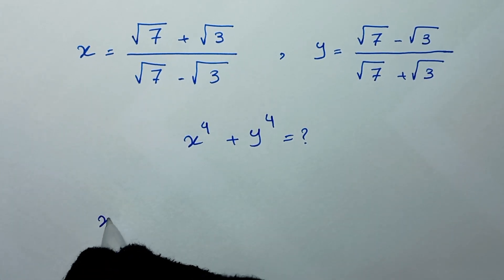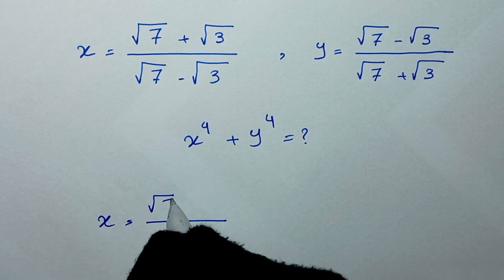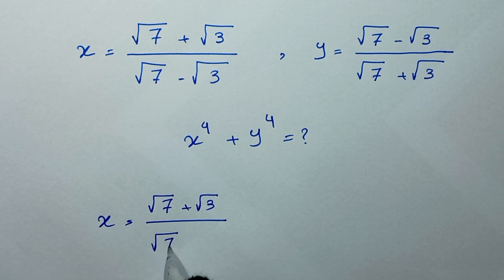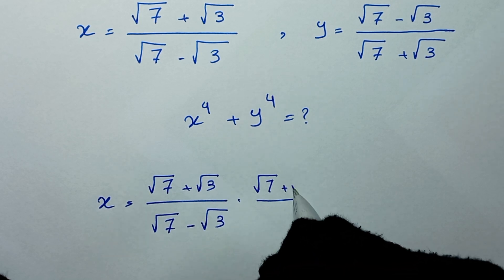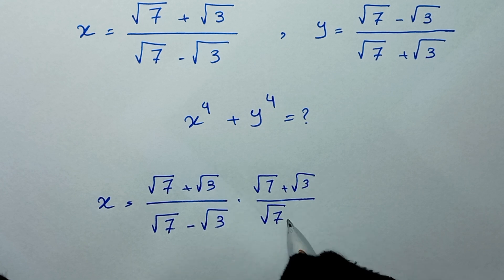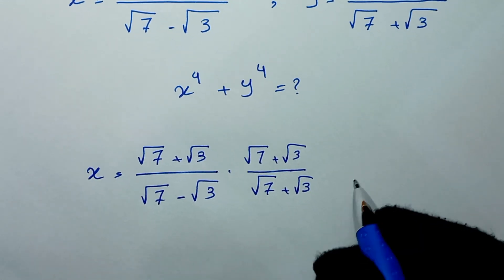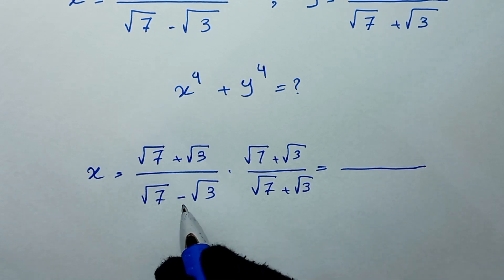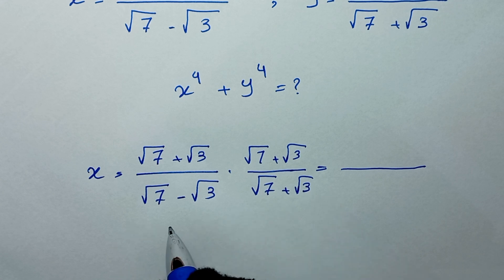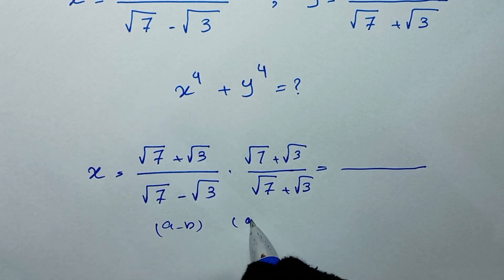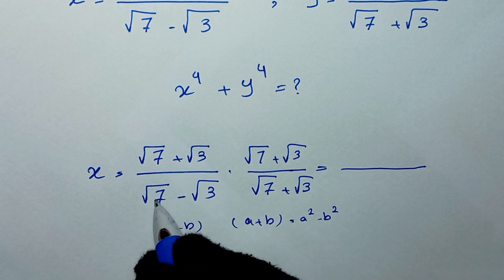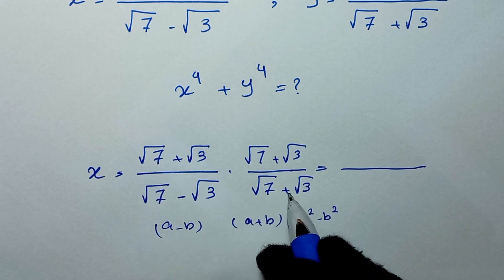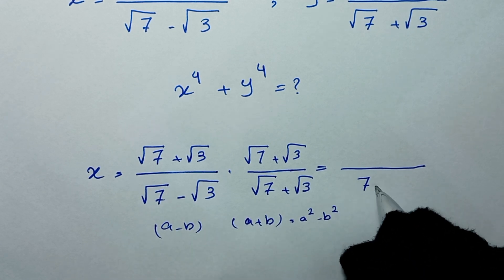For x, we have square root of 7 plus square root of 3 over square root of 7 minus square root of 3, and we multiply this by square root of 7 plus square root of 3 over square root of 7 plus square root of 3. The denominator is in the form of a minus b times a plus b, which equals a squared minus b squared. So it will be 7 minus 3, which equals 4.